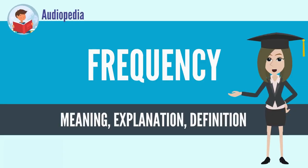Frequency is the number of occurrences of a repeating event per unit of time. It is also referred to as temporal frequency, which emphasizes the contrast to spatial frequency and angular frequency. The period is the duration of time of one cycle in a repeating event, so the period is the reciprocal of the frequency.